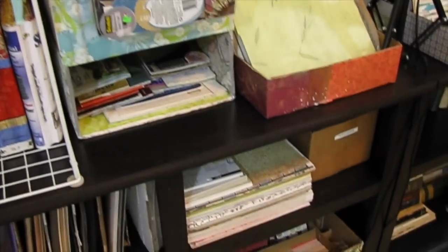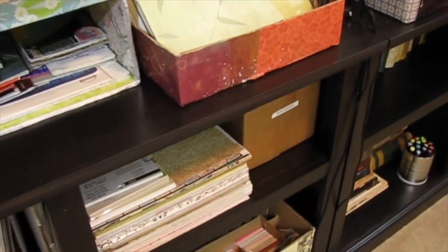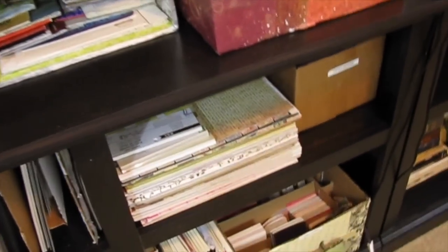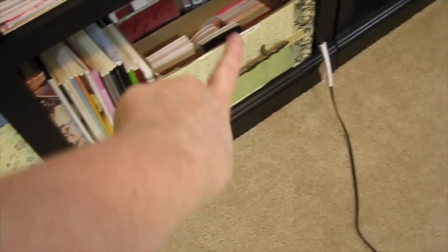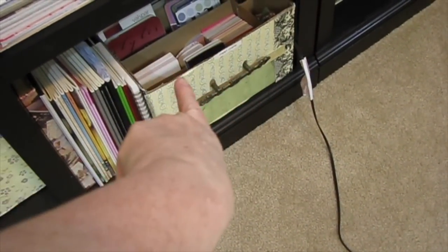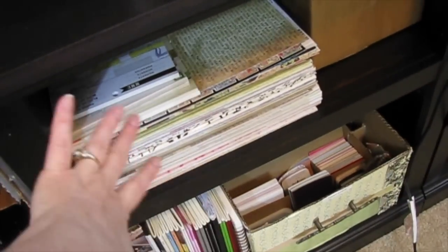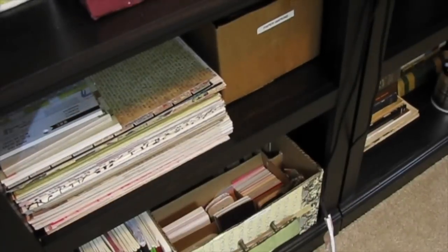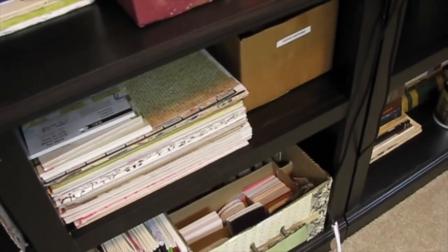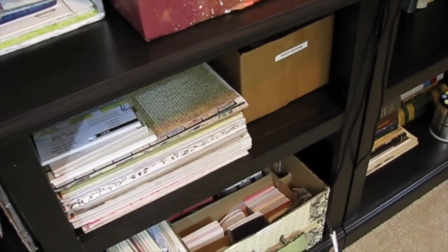And moving down, we have, down here are blank journals. And those are paint chips, paint samples, paper napkins, and scrapbook paper. I'm not through with my labeling. I still have a few more labels to do. But other than that, I'm done.